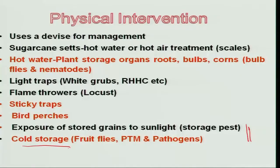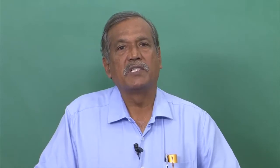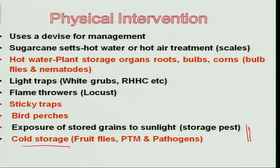Similarly, the opposite approach — the use of cold — can also be a device. For example, mangoes containing fruit fly, potatoes containing potato tuber moth, and some nematodes and diseases present in stored products can be addressed by storing in cold conditions — for example, about 12 degrees centigrade for about 4 hours — which can knock down all these populations permanently. That is how all these techniques of physical intervention can be used in reducing pest populations, fitting very well in the IPM concept.